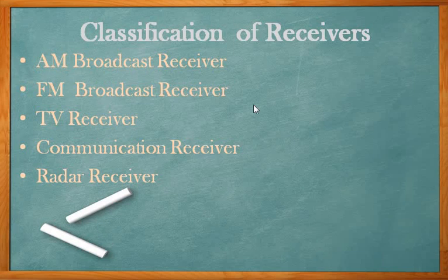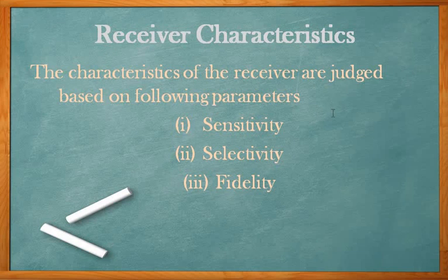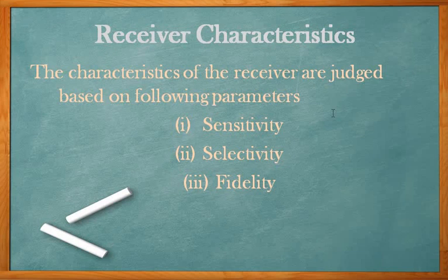Now let us move on to the next topic — characteristics of the receiver, which is very important. The receiver characteristics are basically judged on the following parameters. Based upon these three parameters, we will say whether the receiver is having good or bad characteristics. The characteristics of the receivers are judged based upon: first, sensitivity; second, selectivity; and third, fidelity.